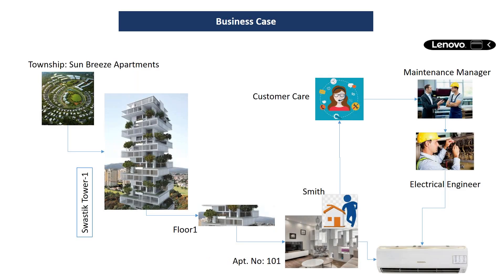This is an example through which we can understand a business case to illustrate the need for a functional location — the same business case from my SAP EAM overview. Let's say there is a township called Sunbreeze Apartment, which has different buildings: Tower 1, Tower 2, Tower 3. On a particular floor, there is one apartment. We are considering ourselves as the owner of this township, providing maintenance to our tenants.